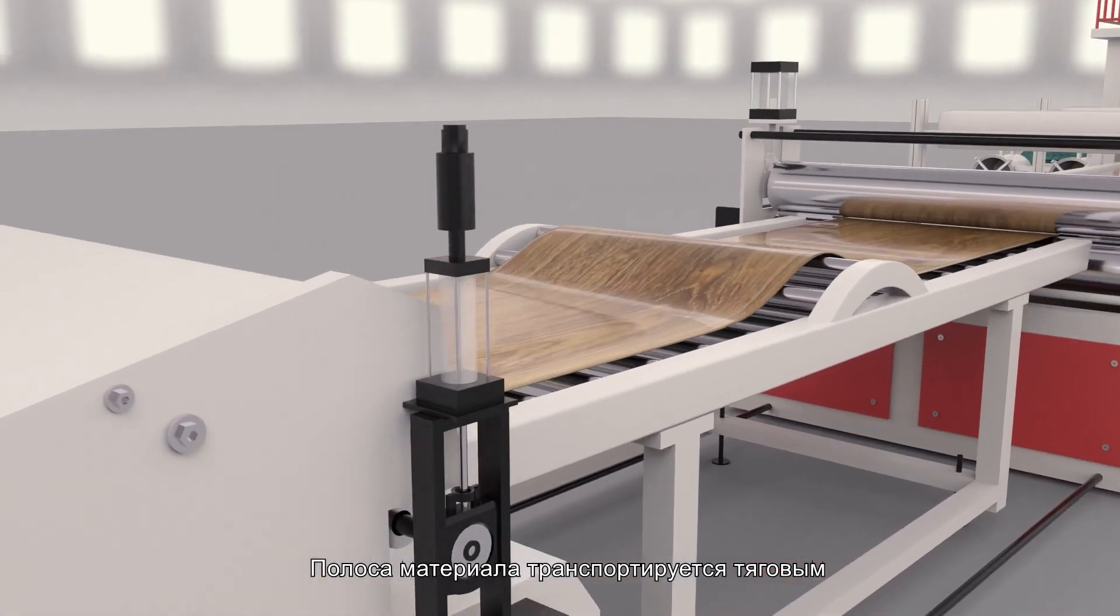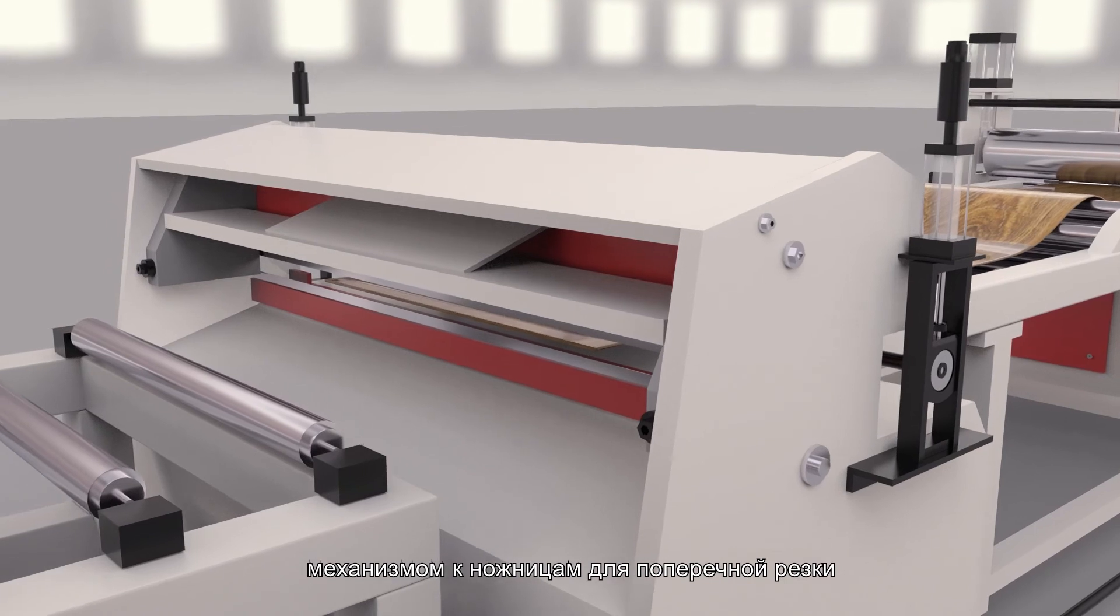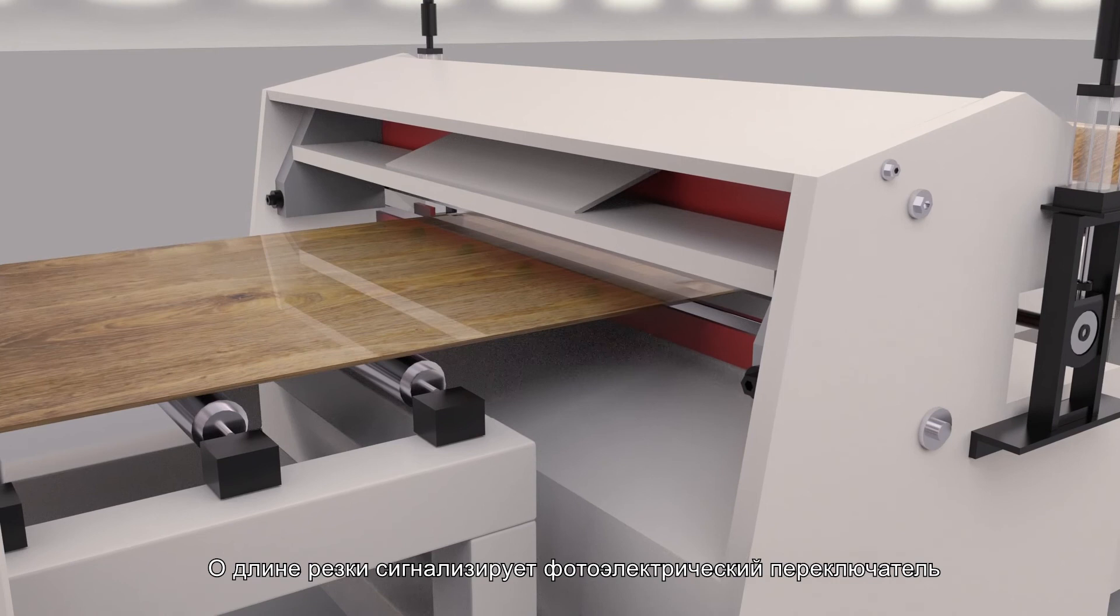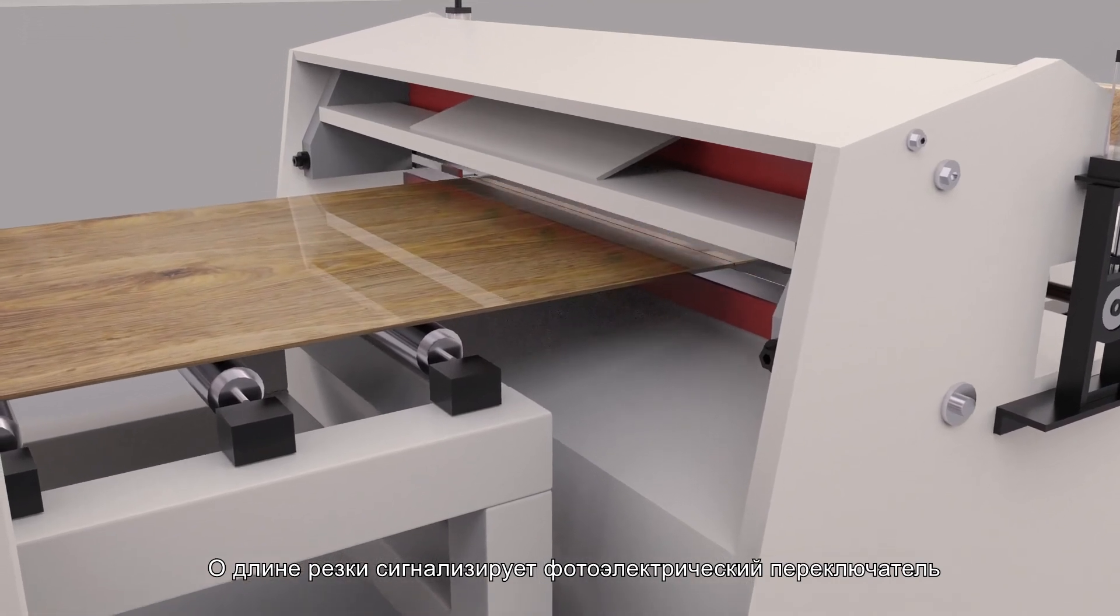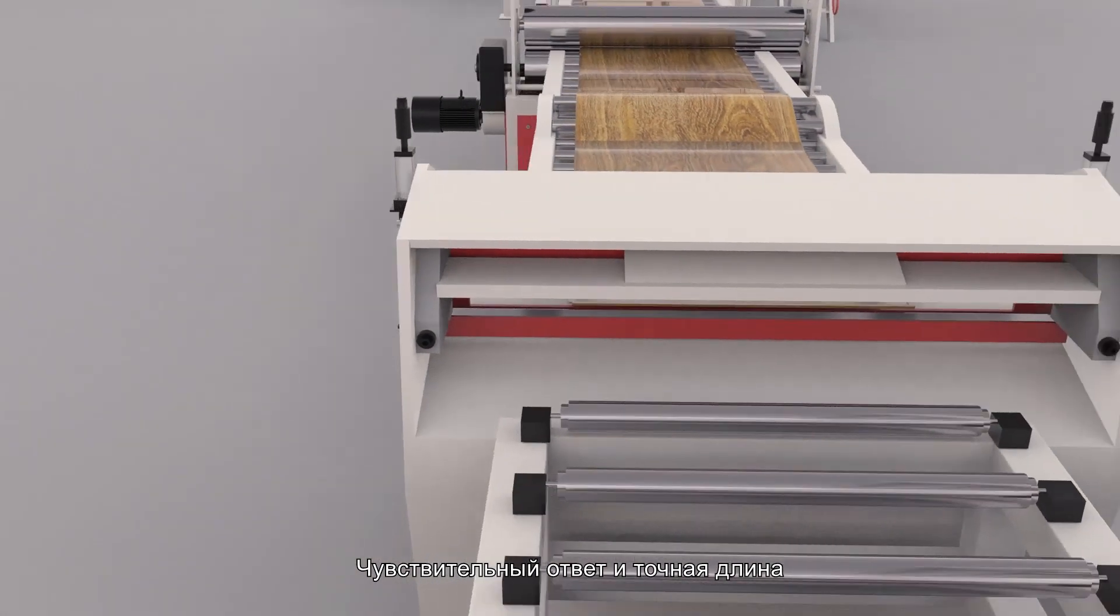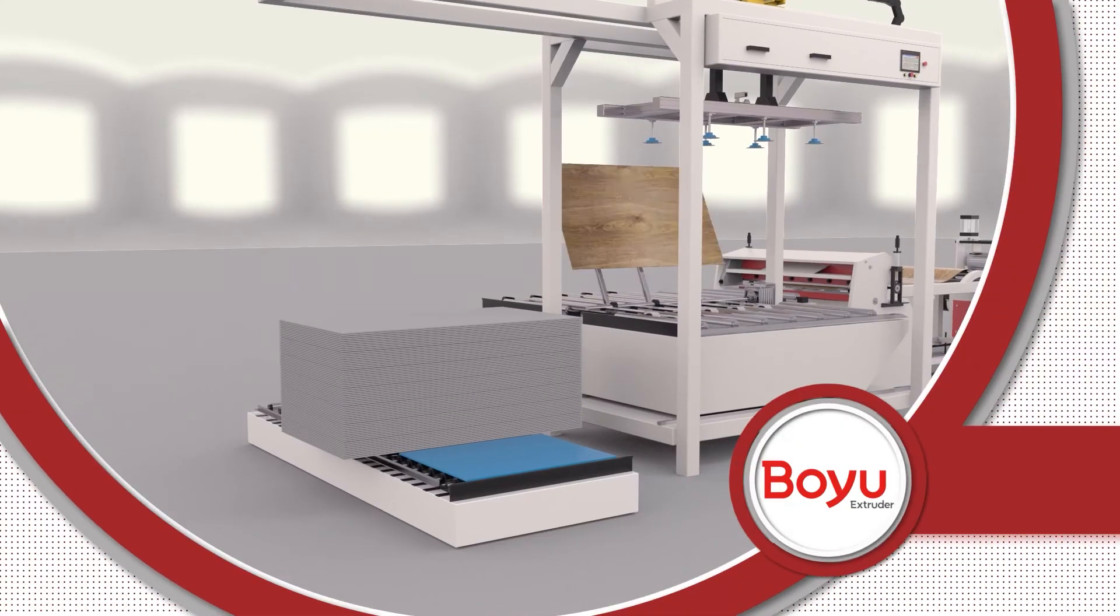The material strap is transported to the shearing machine by the tractor for cross-cutting. For the cutting length, the signal is transmitted by photoelectric switch so that the response can be sensitive and the length can be accurate. Automatic Plating Machine.